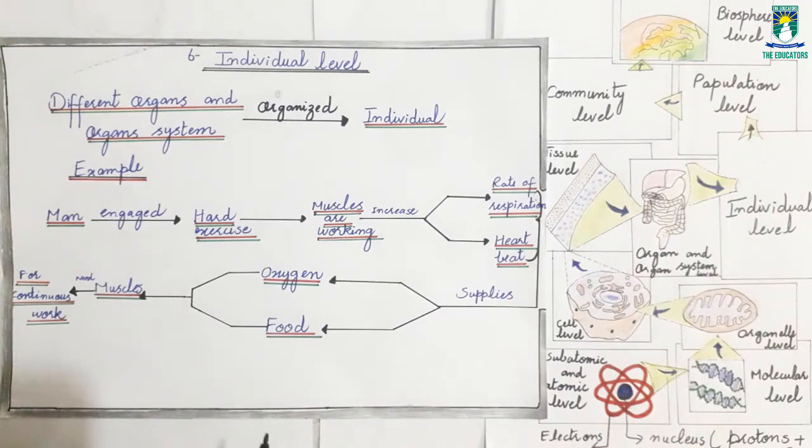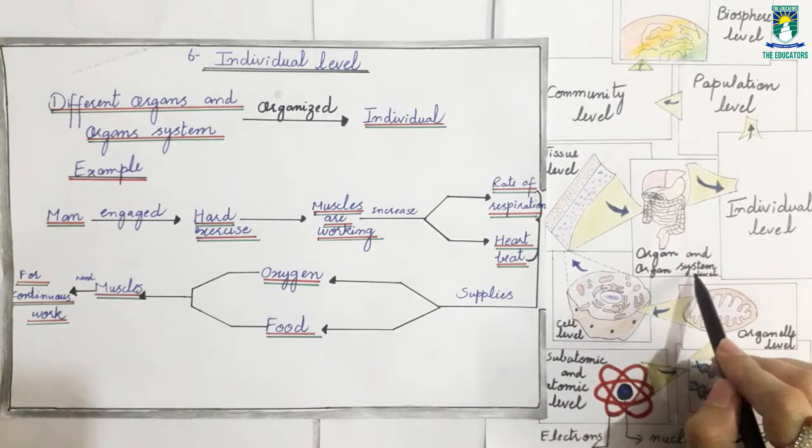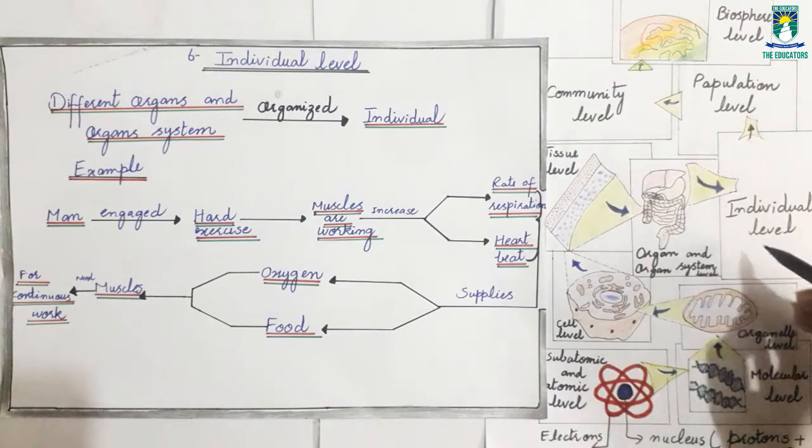It is because the increased rate of respiration and heartbeat supplies more oxygen and food to our muscles, which they need for continuous work. As you can see in the diagram, organs and organ systems assemble together and they form an individual or an organism.